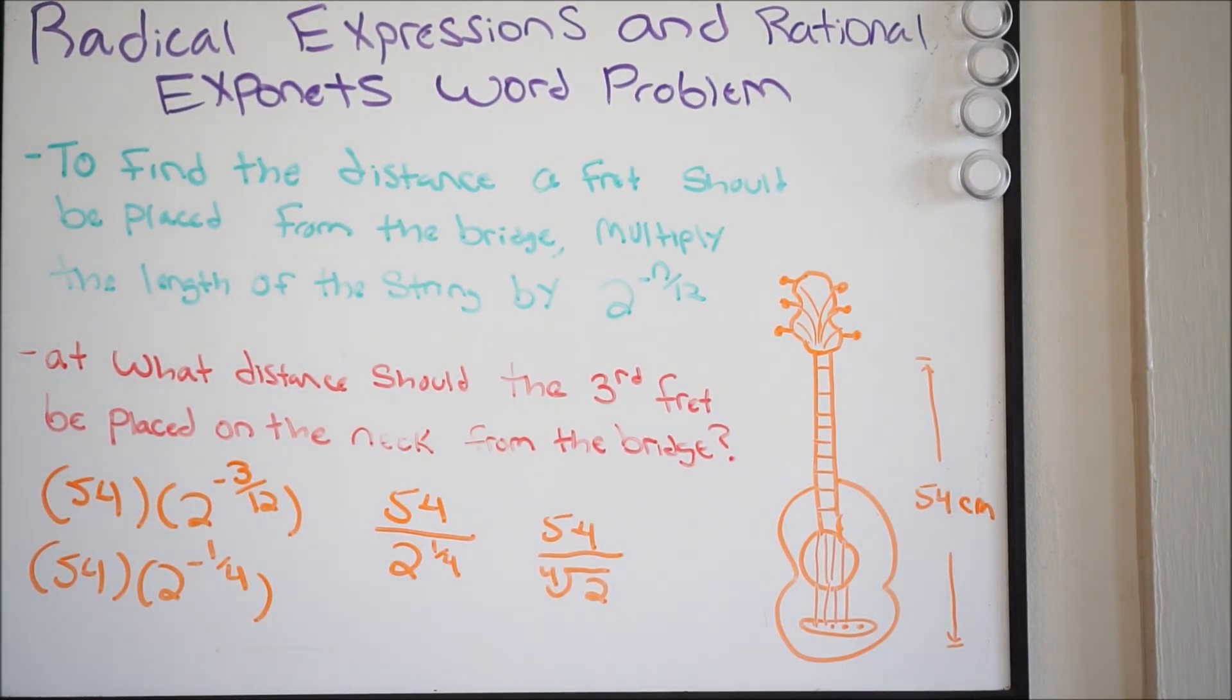And now what we're going to do here is we're going to plug this into our calculator, and we're going to figure out what we get here. So we're going to do 54 divided by the fourth root of 2. So let's go ahead and do this.